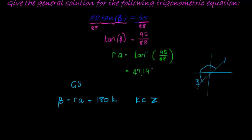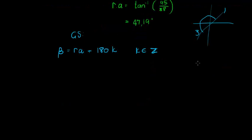So k is still an element of integers. And since we have our reference angle as 47.19 plus 180 times k, where k is an element of integers, that is therefore the solution, or at least the general solution to this equation.